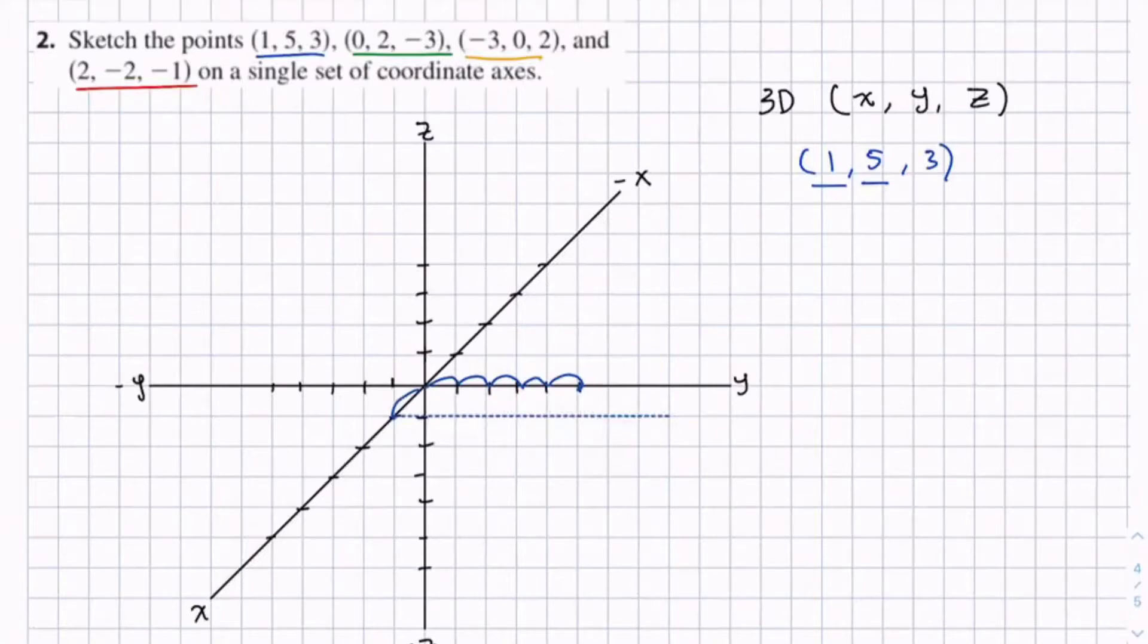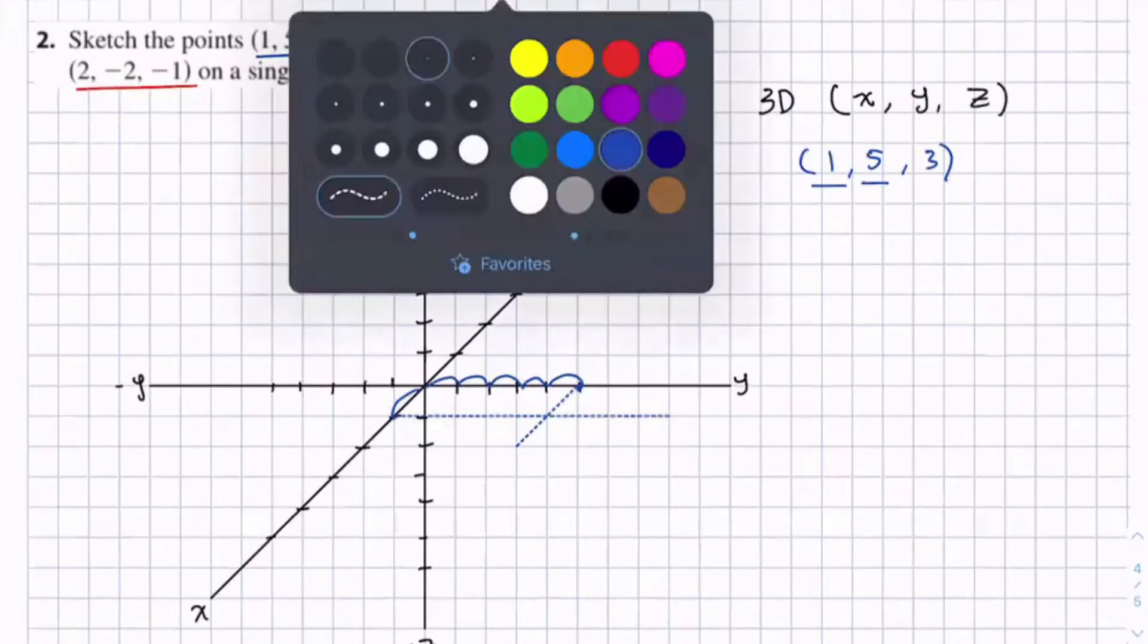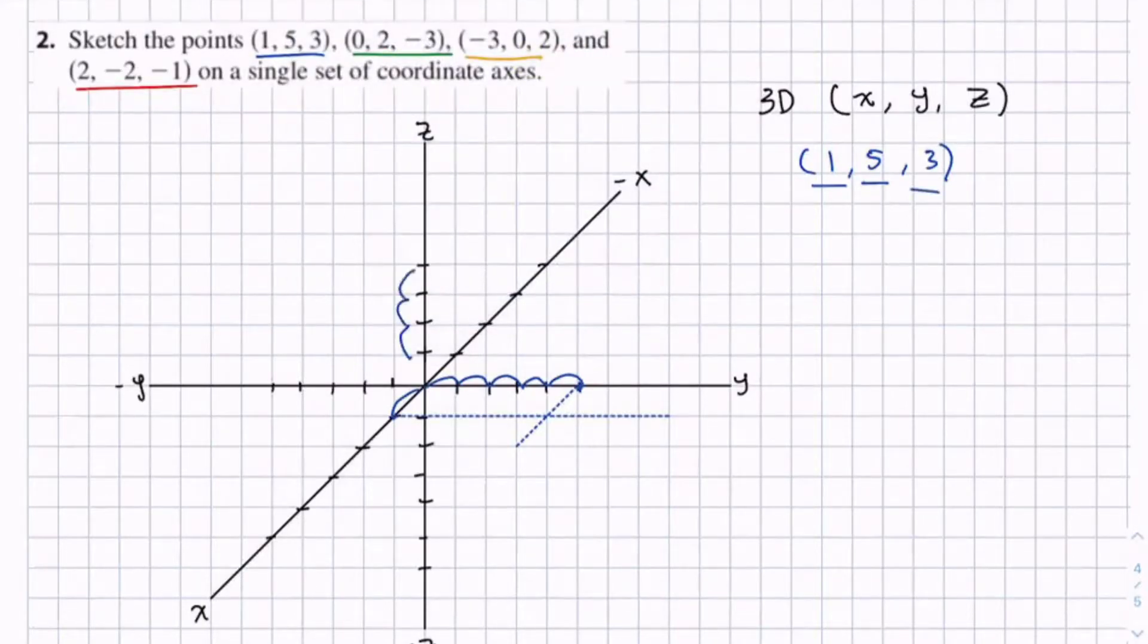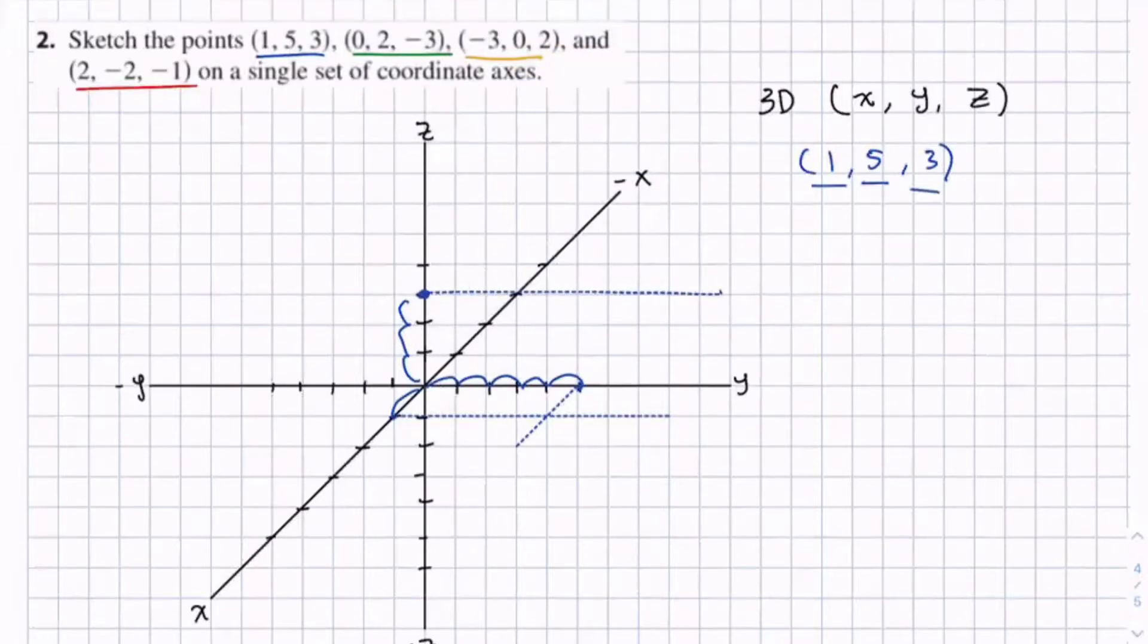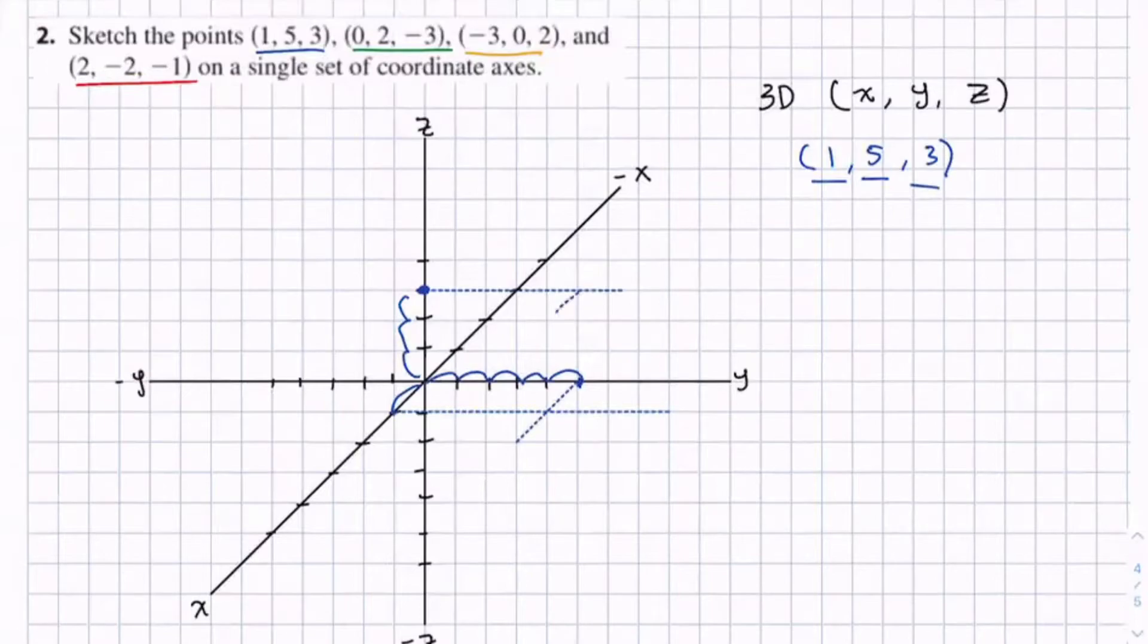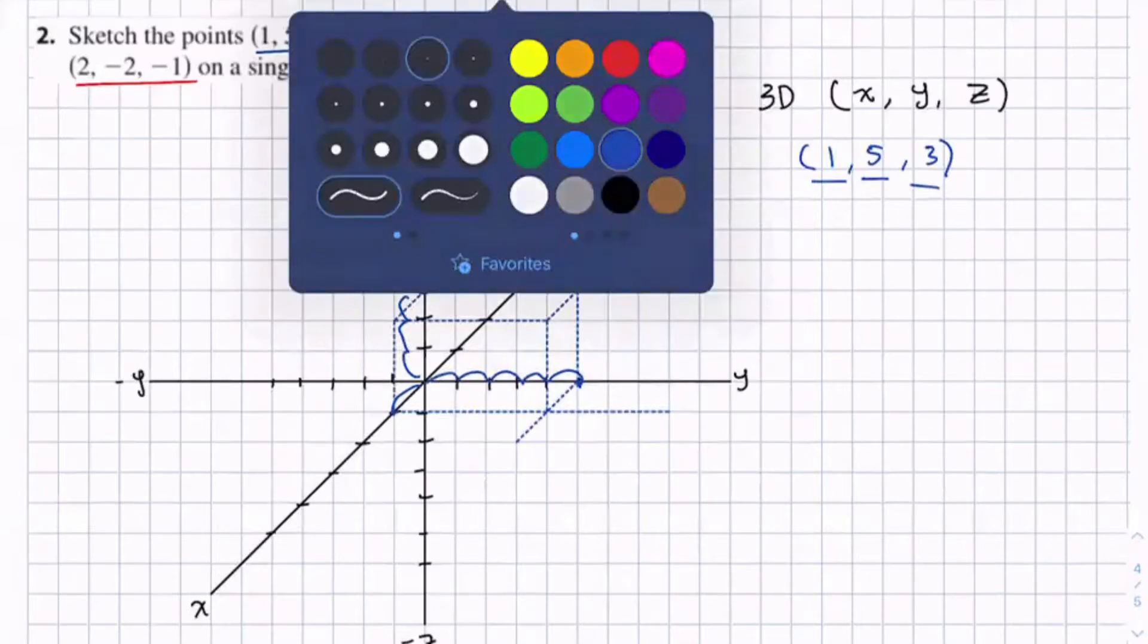So notice how this axis, the dotted line I just drew, is parallel to the y-axis. And this dotted line is going to be parallel to the x-axis. There's a box method of doing this. I'll show it for one example. But generally, it's faster not doing this box method. So for the box method, you need to find the z component. So it's 3. You go up 1, 2, 3. And you basically draw out a box of all these parallel axes.